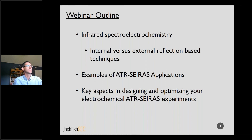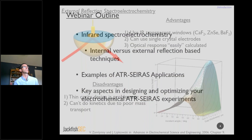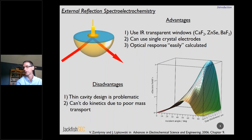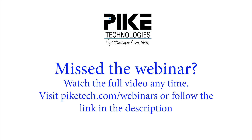Let's start with a little introduction to two types of infrared spectroelectrochemistry. One of the more early adaptations of spectroelectrochemistry in the infrared was the so-called external reflection technique. In this technique, you're using an infrared transparent window of relatively low refractive index — something with high IR transparency, such as calcium fluoride.